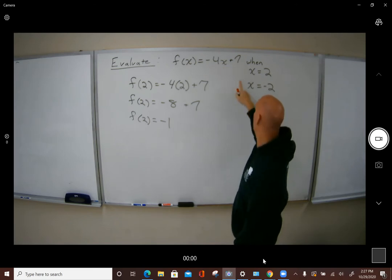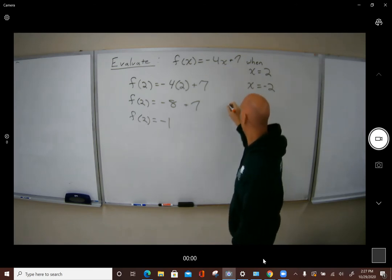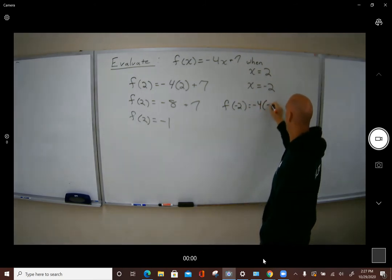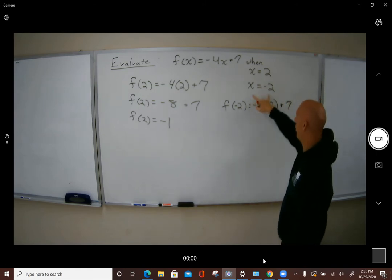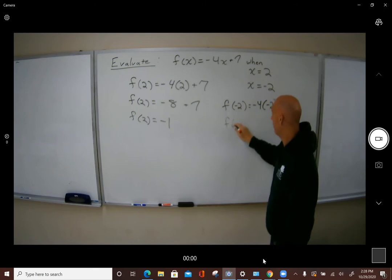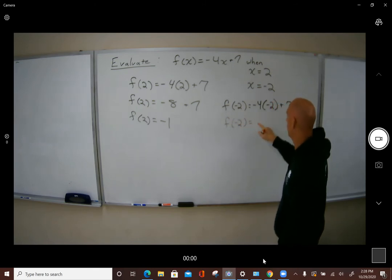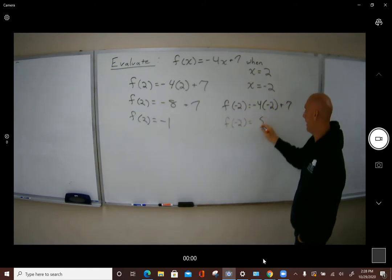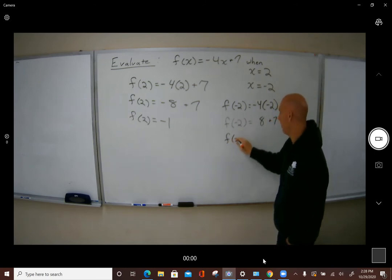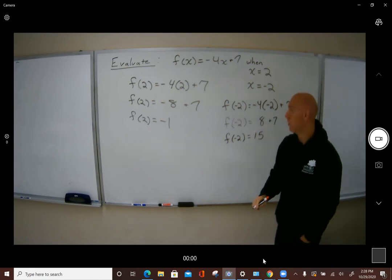So now it's f of negative 2 equals negative 4 times negative 2 plus 7. So again, all I did was find for a specific input. F of negative 2 would equal negative 4 times negative 2 is positive 8 plus 7. So f of negative 2 equals 15.